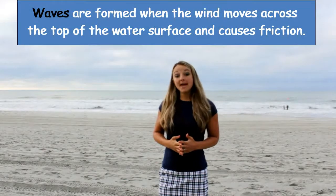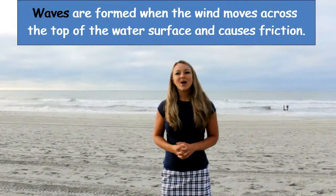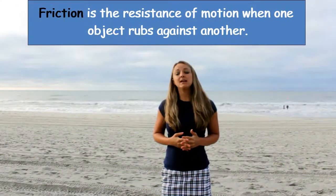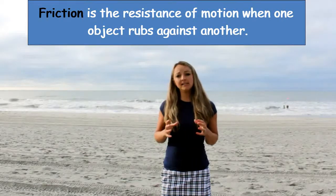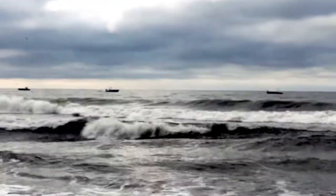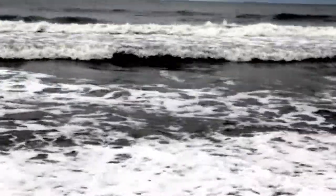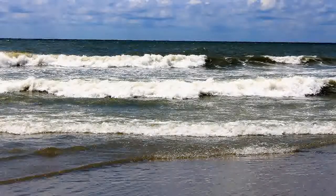Waves happen when the wind moves across the top of the water surface and causes friction. Friction is when the motion is resistant and the two things rub together against each other. When the wind blows across the top of the water surface it causes friction and makes it move. That's why waves can be all different sizes — there can be big waves and little waves. It depends on how much wind there is. If it's a really windy day, the wind can cause a lot of friction and make the waves move really big and really strong.